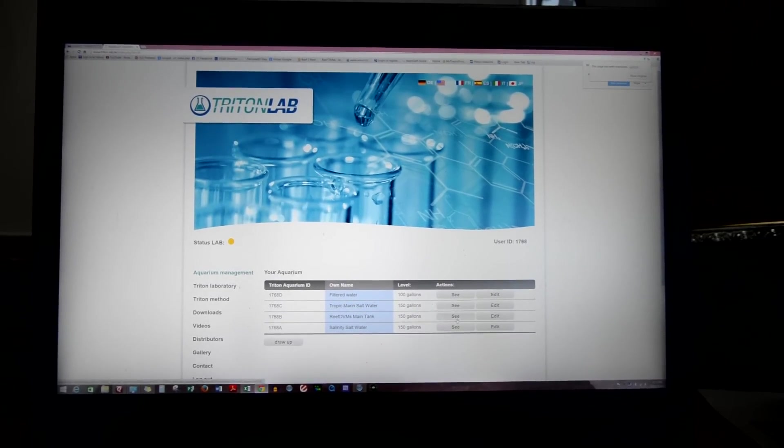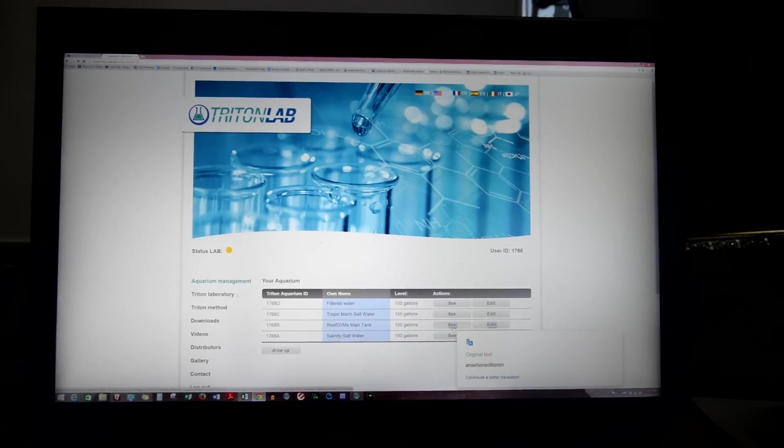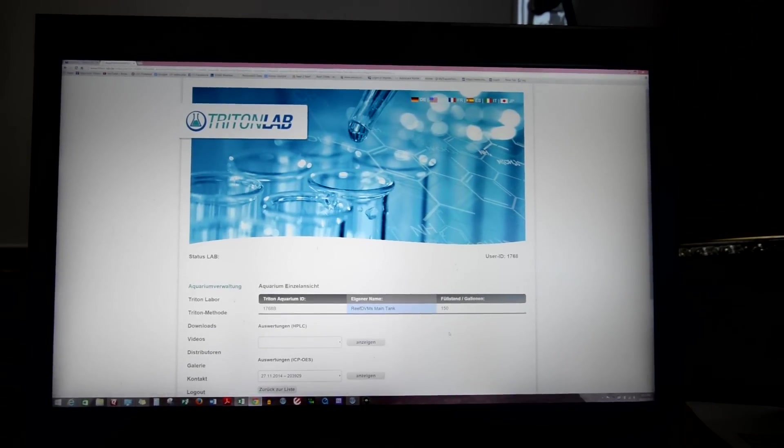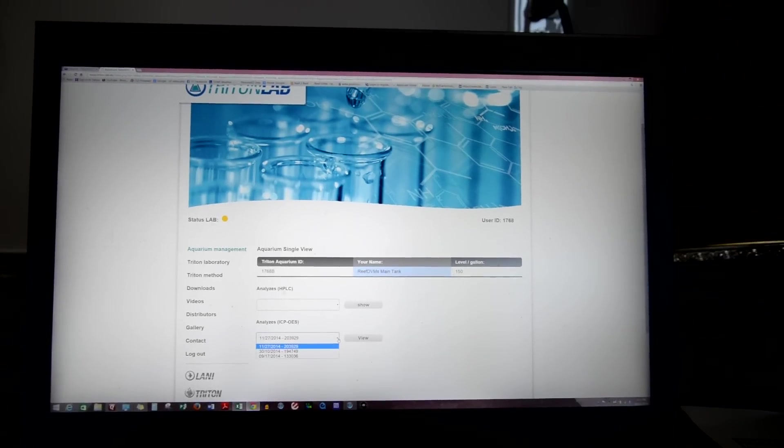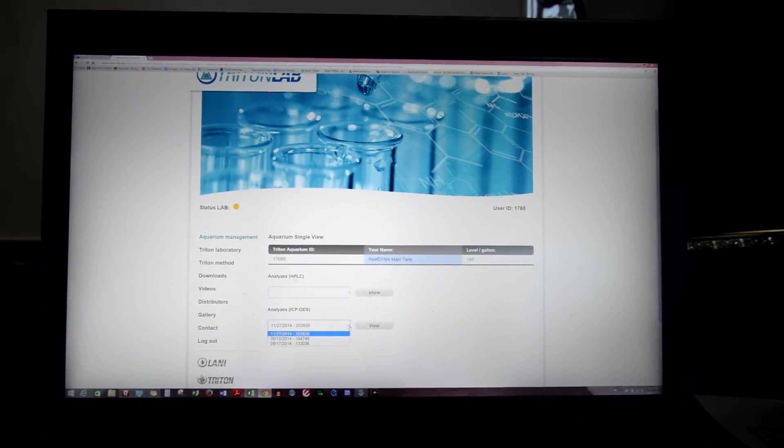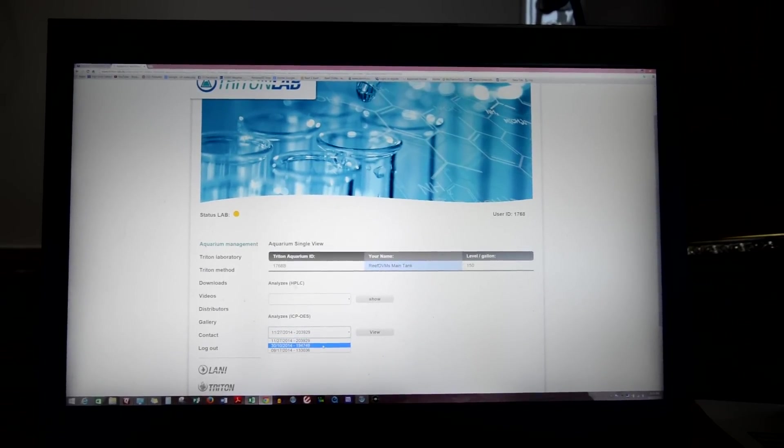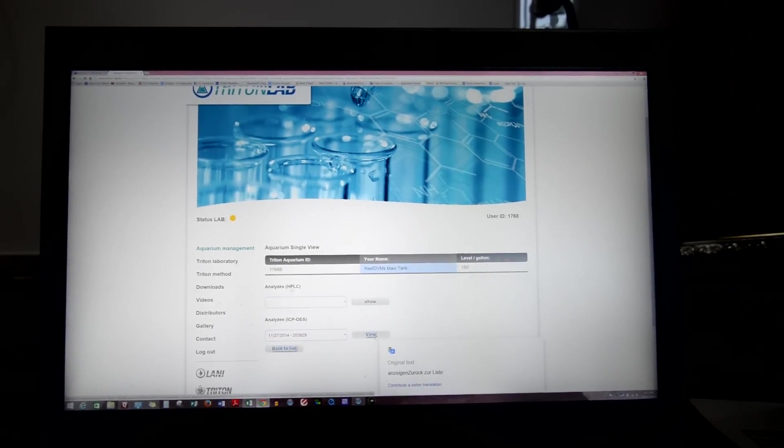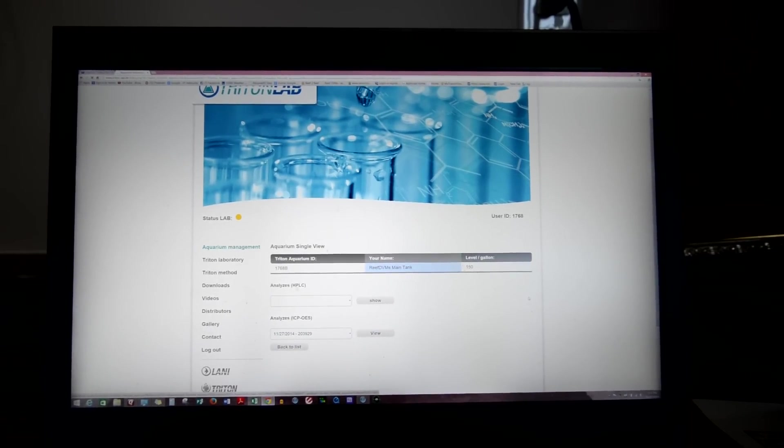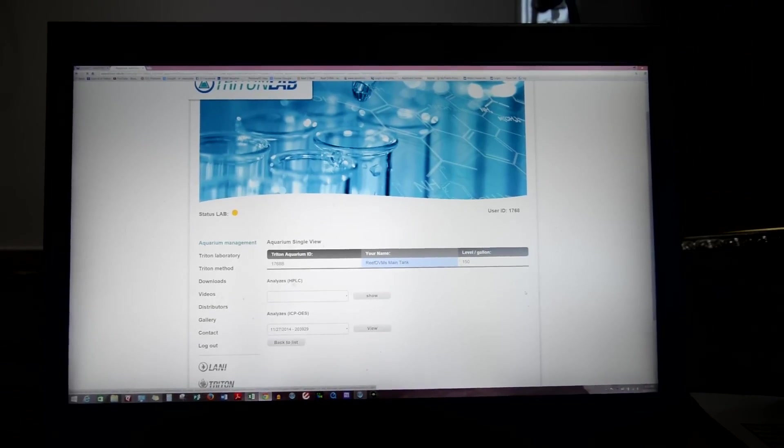And basically you get your water test. In this case I can go look at November's value here. I can bring it up by clicking on it. Each test takes a couple weeks depending upon the time frame of how busy the lab is to get you the results back. And they send them to you back in email version. You can take them though and print them if you'd like. I'll show you that in a minute.